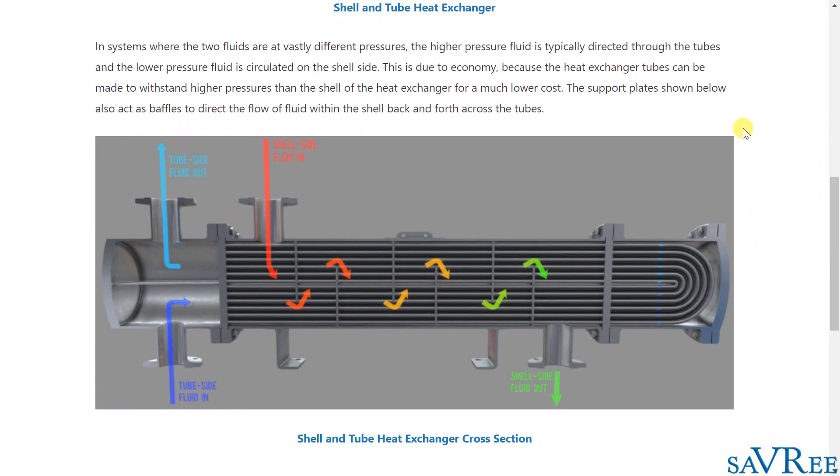In systems where the two fluids are at vastly different pressures, the higher pressure fluid is typically directed through the tubes and the lower pressure fluid is circulated on the shell side. This is due to economy because the heat exchanger tubes can be made to withstand higher pressures than the shell of the heat exchanger for a much lower cost.